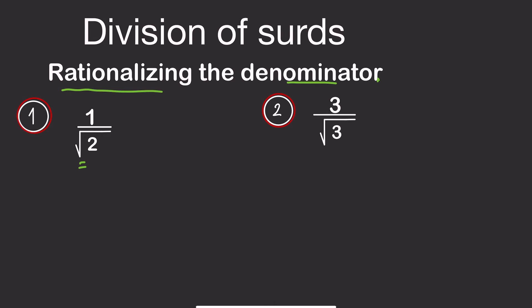For example, if I have 1 over the square root of A, and we don't want the denominator to have a square root, to rationalize we need to multiply the denominator by root A. So if we do that, 1 times root A will give us root A.